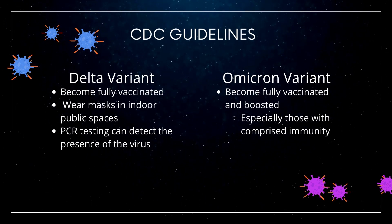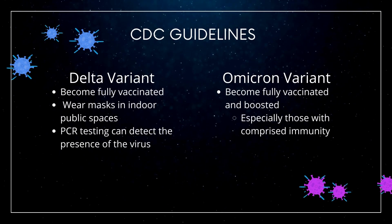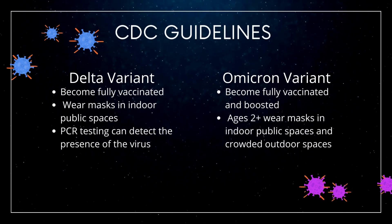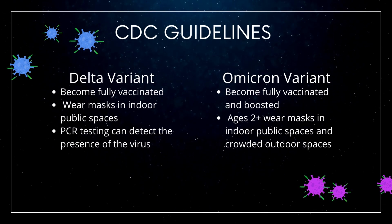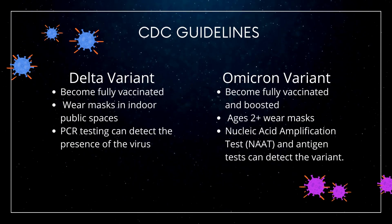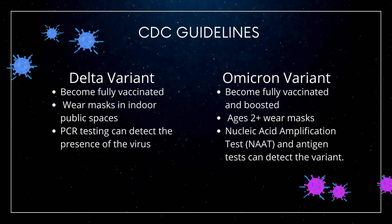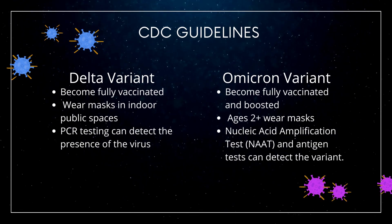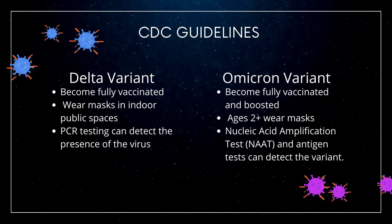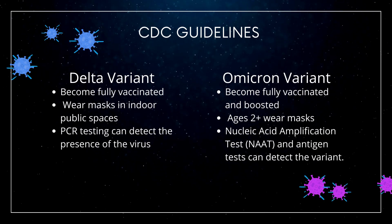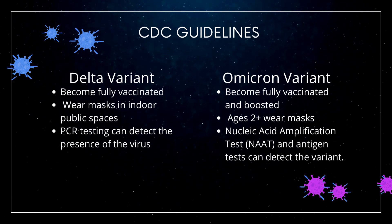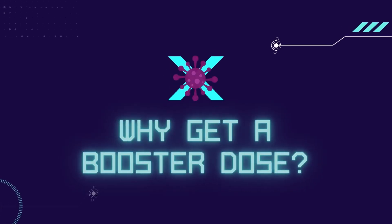For the Omicron variant, the CDC recommends getting vaccinated and boosted, especially if you have compromised immunity or live with someone with such a condition. They also recommend that people age 2 and above wear masks in indoor public spaces as well as crowded outdoor spaces. They also note that the Omicron variant is no longer reliably detected by PCR testing, and thus testing methods such as nucleic acid amplification tests and antigen tests can determine the presence of this variant in the body.